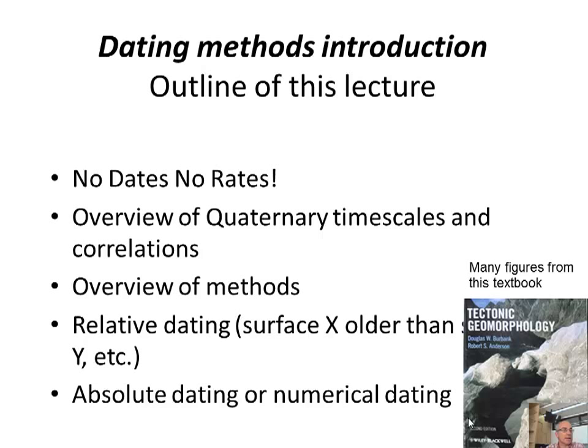We'll go over quaternary timescales and correlations. Remember what we're trying to date — mostly the quaternary timescale, or even the Holocene, or just centuries, just hundreds of years. Then an overview of the main methods, and the key point is that there are two classifications: relative dating and absolute or numerical dating.